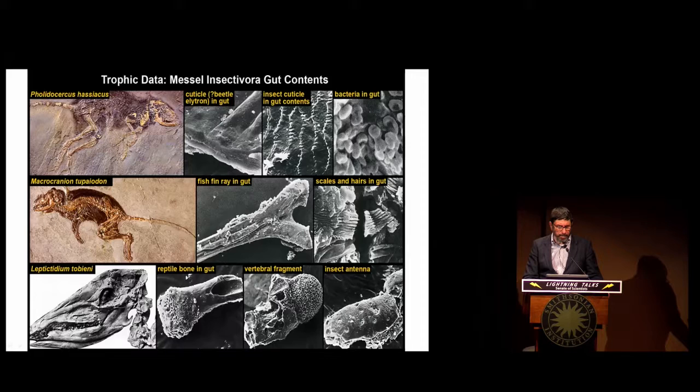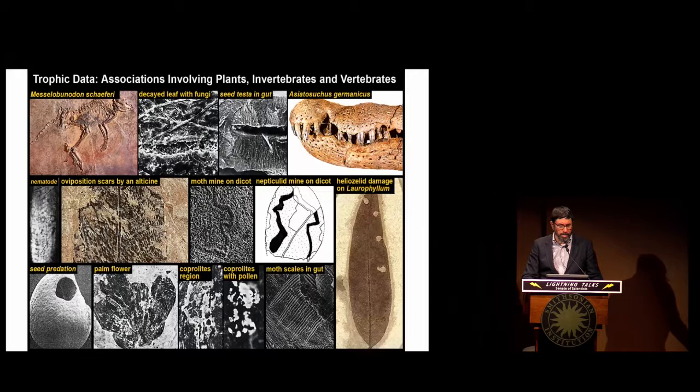In the case of the hedgehog at the upper left, we see cuticle of a beetle, other kinds of insect contents, bacteria, another kind of hedgehog-like organism at the left, fish rays and scales. And then we have a very primitive insectivore at the left with reptile bones, vertebral fragments, and other interesting things in the guts. We can see an example of carnivory at the upper right, and then all kinds of intricate insect-plant relationships such as seed predation, leaf mines, oviposition, and even in the case of bats, moth scales in their guts as well. So there's a lot of trophic information.